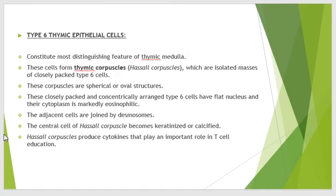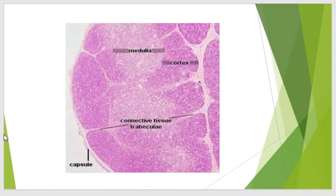Type 6 thymic epithelial cells are the most important and constitute the most distinguishing feature of the thymic medulla. These cells form thymic corpuscles, also called Hassal's corpuscles. Hassal's corpuscles are isolated masses of closely packed type 6 cells — spherical or oval structures that are concentrically arranged. Type 6 cells have flat nuclei and markedly eosinophilic cytoplasm. Adjacent cells are joined by desmosomes, and the central cell of Hassal's corpuscles becomes keratinized or calcified. These cells produce cytokines that play an important role in T cell education.